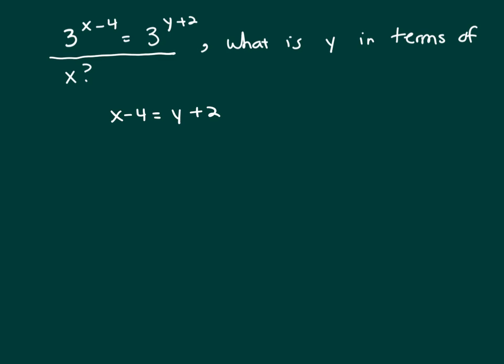Now let's solve for y. To solve for y we need to subtract 2 from both sides. So x minus 6 equals y. So x minus 6 is your answer.